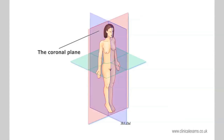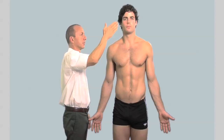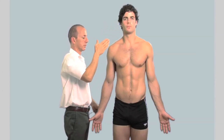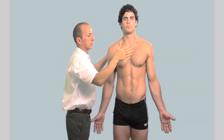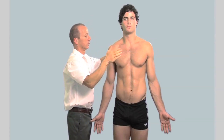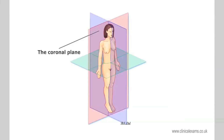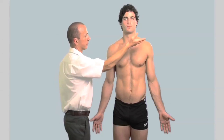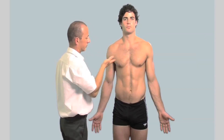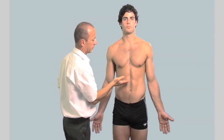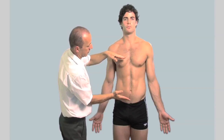The coronal plane is a vertical line that runs in a lateral to lateral direction, dividing the body into non-symmetrical anterior and posterior portions. It is at right angles to the sagittal plane. The transverse plane is marked by a horizontal line dividing the body into superior and inferior portions.